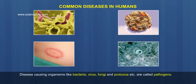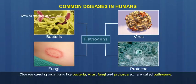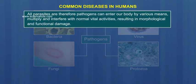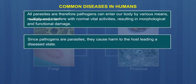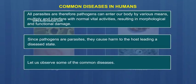Common diseases in humans. Disease-causing organisms like bacteria, virus, fungi and protozoa, etc., are called pathogens. All parasites are therefore pathogens. They can enter our body by various means, multiply and interfere with normal vital activities, resulting in morphological and functional damage. Since pathogens are parasites, they cause harm to the host, leading to a diseased state.